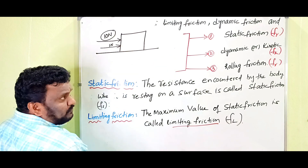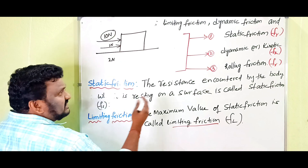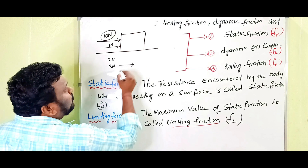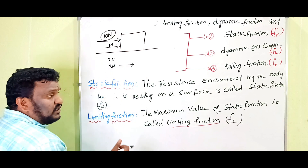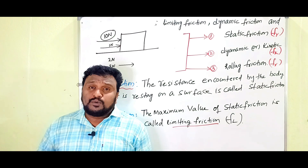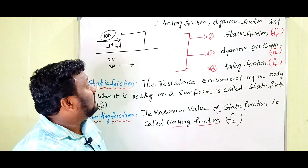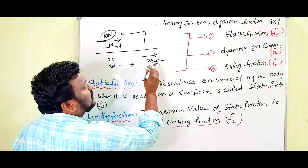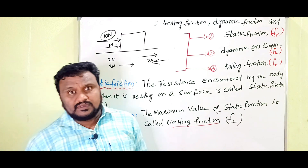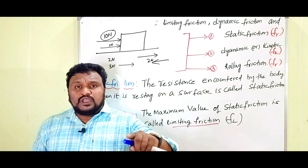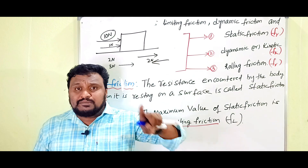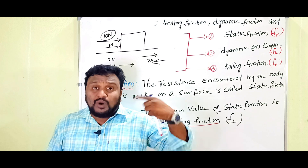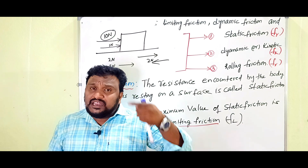We apply 1 newton — it does not move. We apply 2 newtons — it does not move. We apply 3 newtons — it does not move. Even though we are applying the force, it does not move because when we apply 2 newtons in this direction, some frictional force is acting in the other direction. Only when we apply 10 newtons does the block come into motion — from rest to motion. At 1 newton, 2 newtons, up to 9 newtons, it does not move.